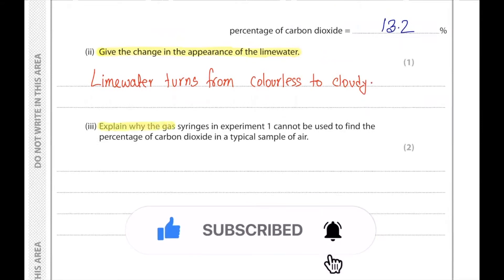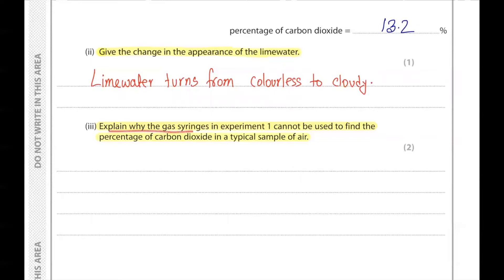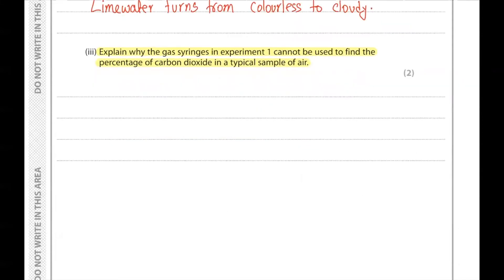Part 3. Explain why the gas syringe in experiment 1 cannot be used to find the percentage of carbon dioxide in a typical sample of air. The reason is because the percentage or the amount of carbon dioxide in the air is too small. Therefore the reading in the syringe would be less than 1 cm³, which will be very hard to read.